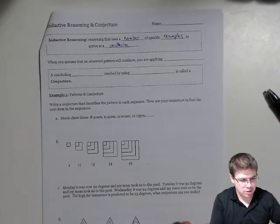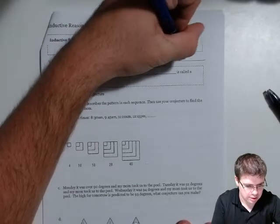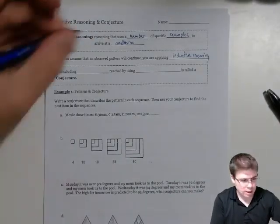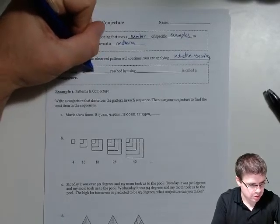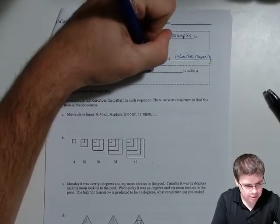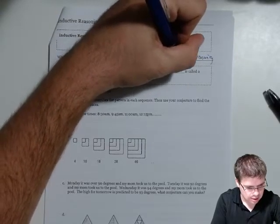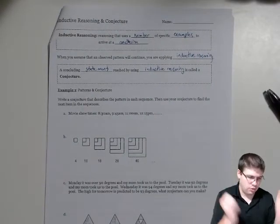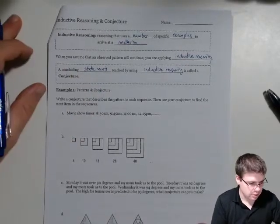So you are applying inductive reasoning. A concluding statement, which remember statements are things that are true or false, reached by using inductive reasoning is called a conjecture. A conjecture we can make based on observation, a pattern we observe. Alright, so we're gonna observe some patterns and make some conjectures.